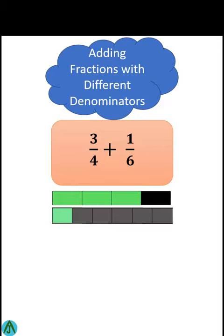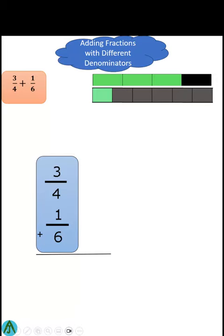First, we're going to rearrange the numbers so it's easier to keep track of things. Write the problem vertically, up and down, just like we would if we're adding regular numbers. There we go.